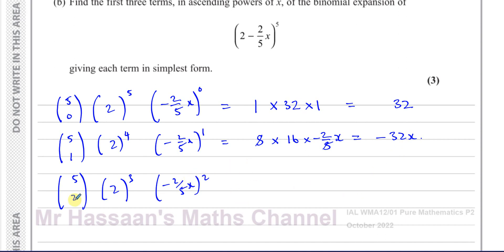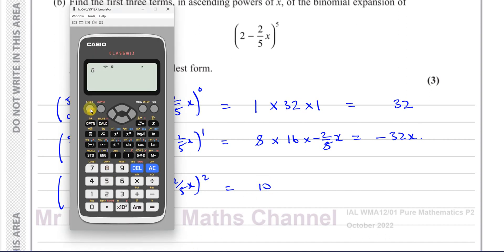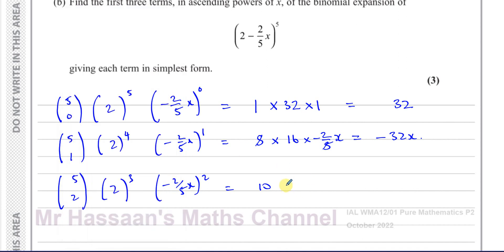The third term is given by 5C2, which is 10 — you can confirm with the calculator using shift and the nCr button — times 2 cubed which is 8, times negative 2 fifths x squared. The negative sign becomes positive because we're squaring it. 2 squared is 4 and 5 squared is 25, giving 4 over 25 x squared. So we have 10 times 8 times 4 over 25: 10 over 25 is 2 fifths, times 8 times 4 is 32... giving 64 over 5 x squared.